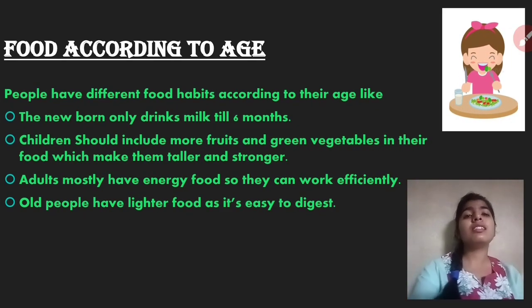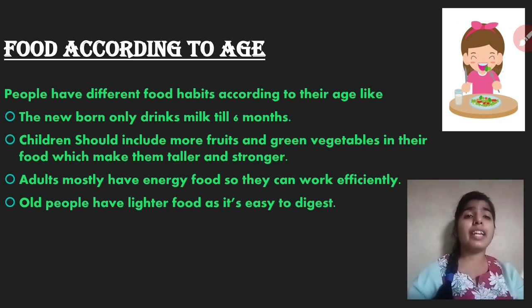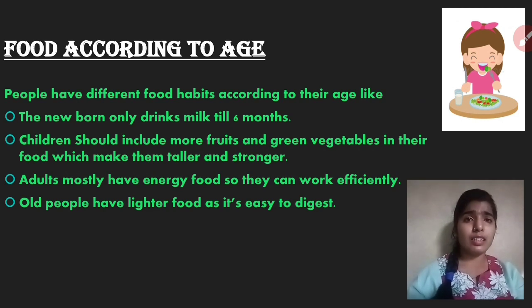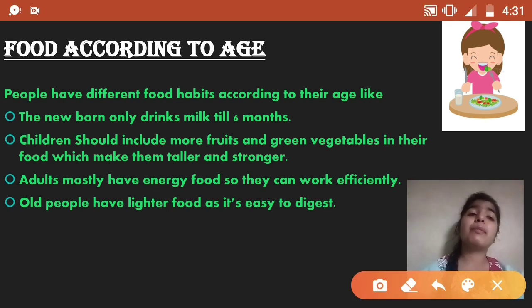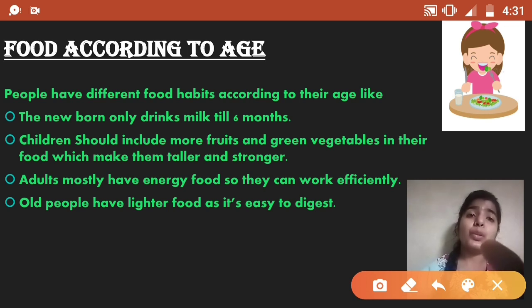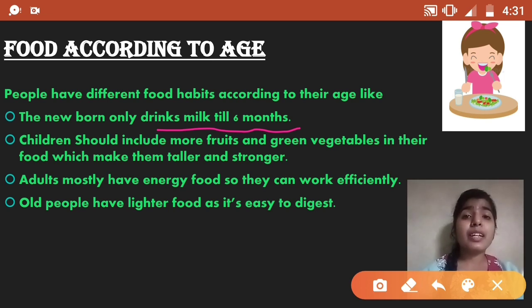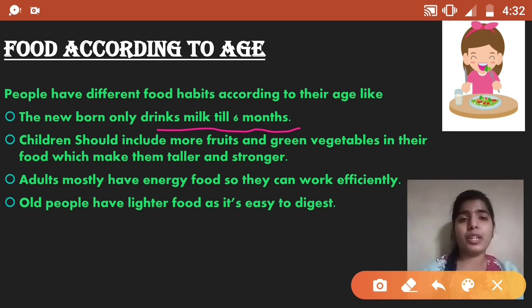We eat food, but we should eat food according to our age. People have different habits according to age. A newborn baby only drinks milk till 6 months — not even water — because the baby gets all the important nutrients from milk.